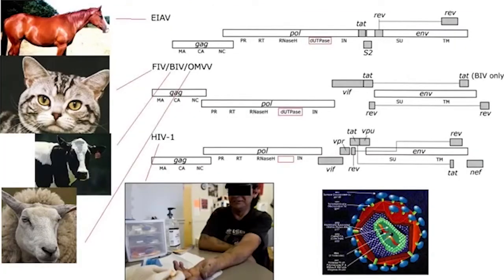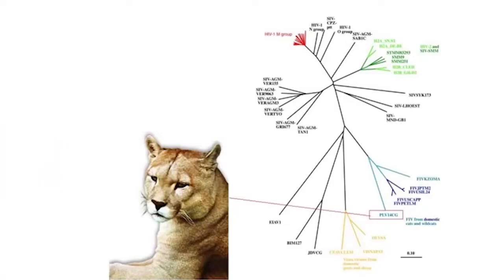HIV is a lentivirus on the basis of its genome and life cycle. It's not all that unusual for the lentiviruses. It infects immune cells, primarily CD4-positive T-cells and macrophages. The other lentiviruses pursue similar, if slightly different, life cycles. There are lentiviruses that infect cats, goats, horses, sheep, cows, and monkeys. There's even a puma lentivirus.